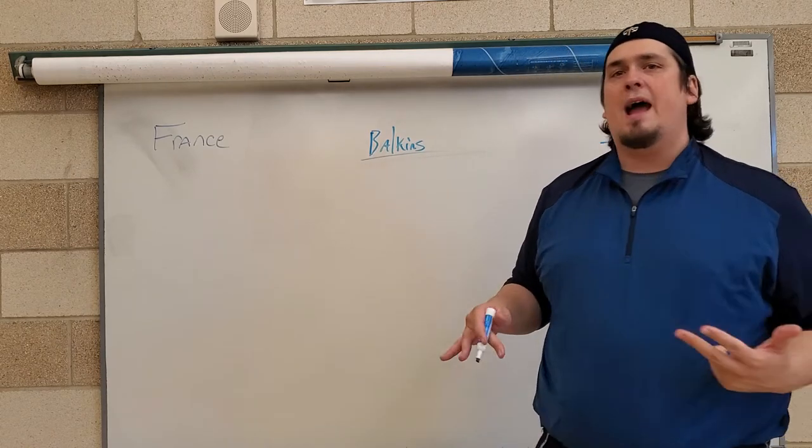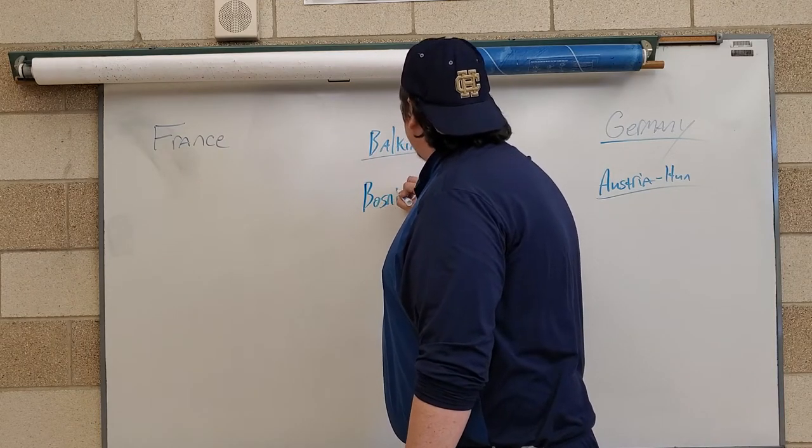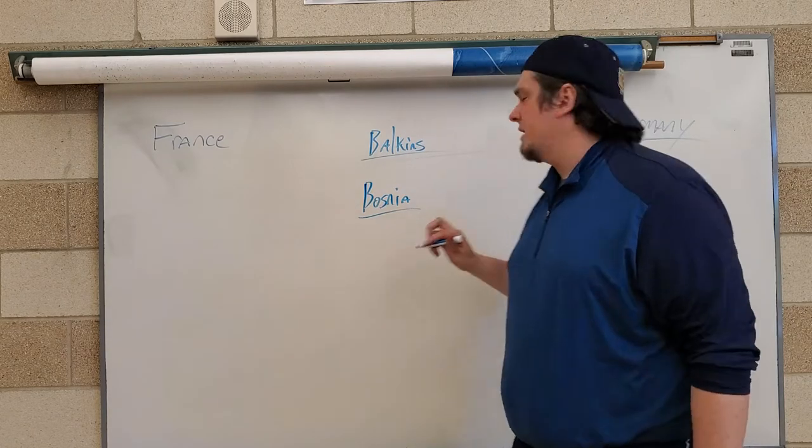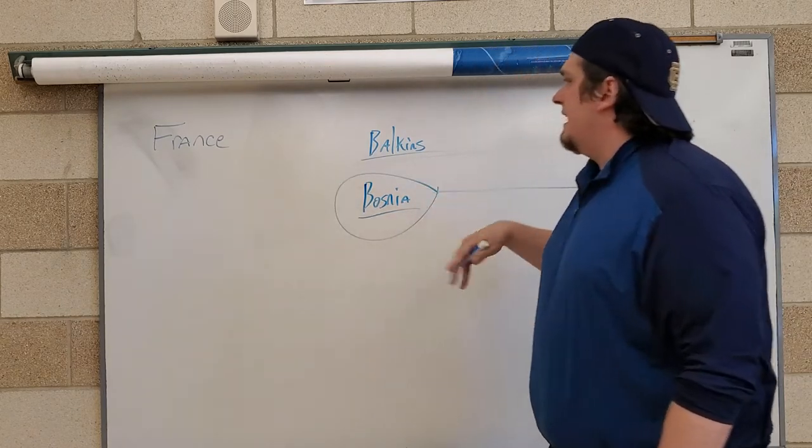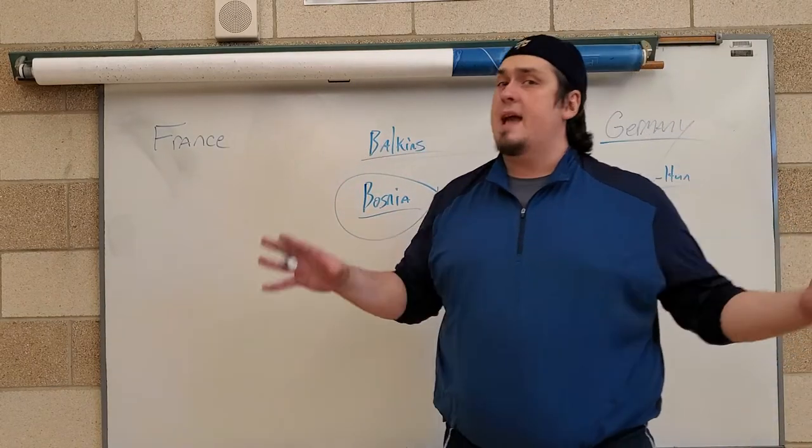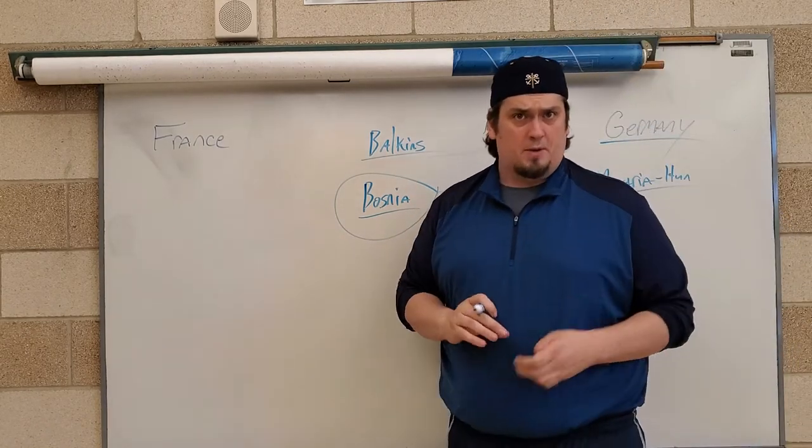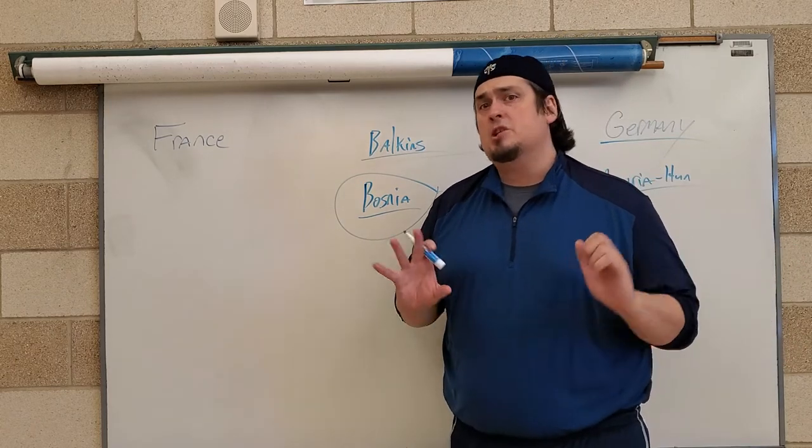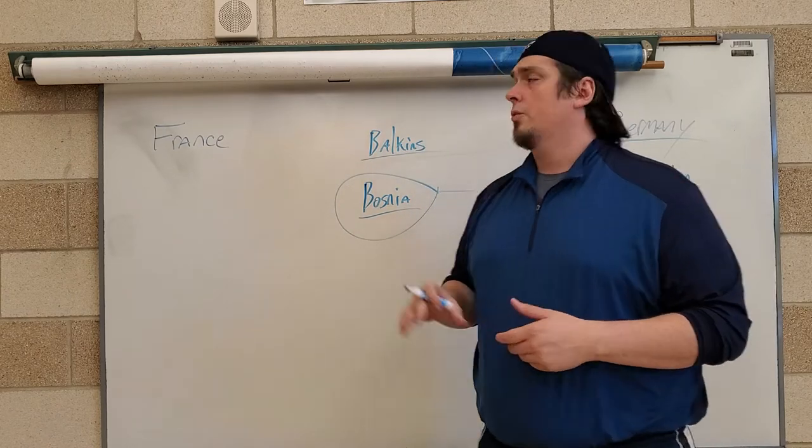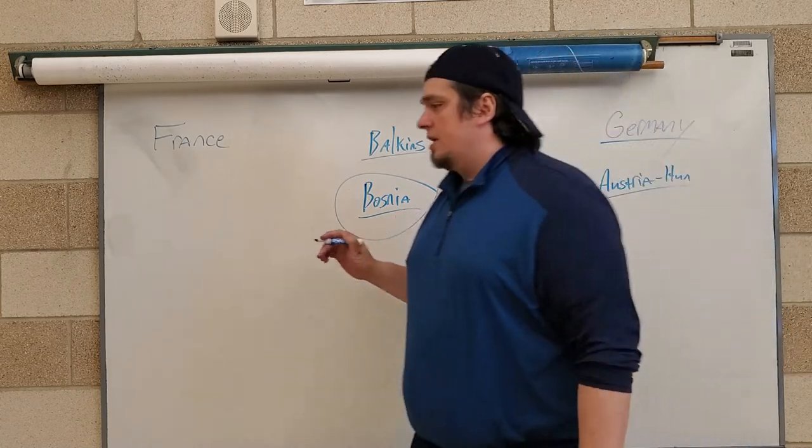Now all these places are up for grabs. One of the places that was really up for grabs is a place called Bosnia. Bosnia is going to be conquered and taken over by Austria-Hungary. The Russians didn't really like that. So in the 1880s and 1890s, as Russia begins to really dislike the Austrians, who they already hated to begin with, the Russians begin to look to France. And France looks to Russia because Russia is on the other side of Germany.